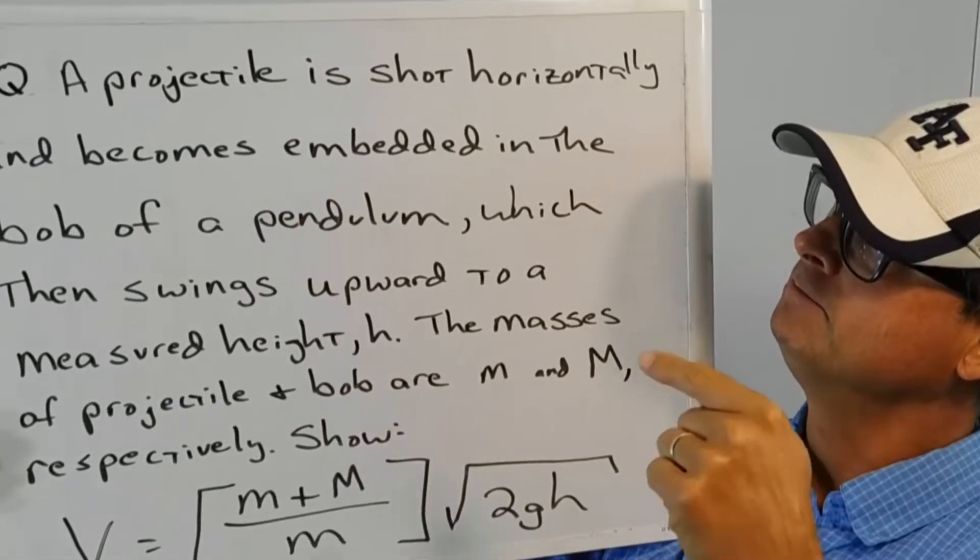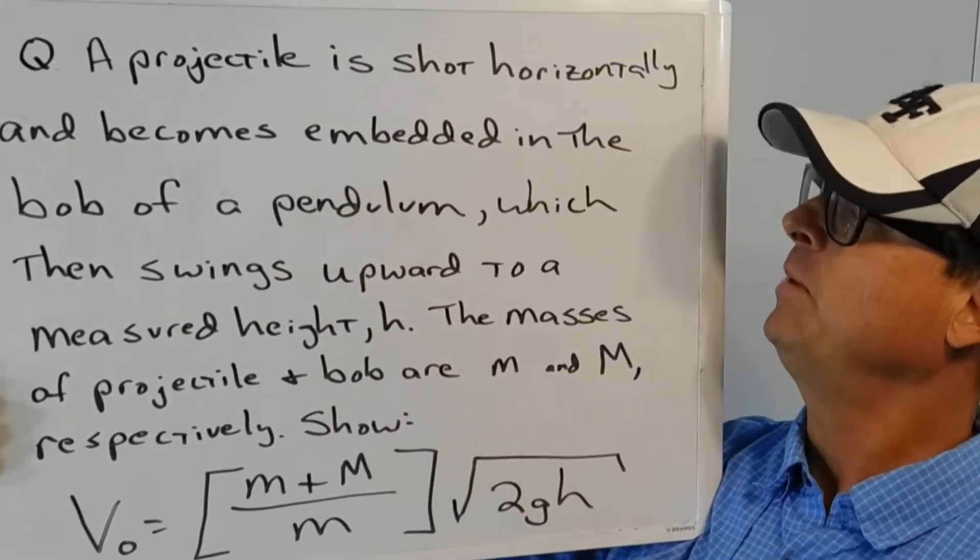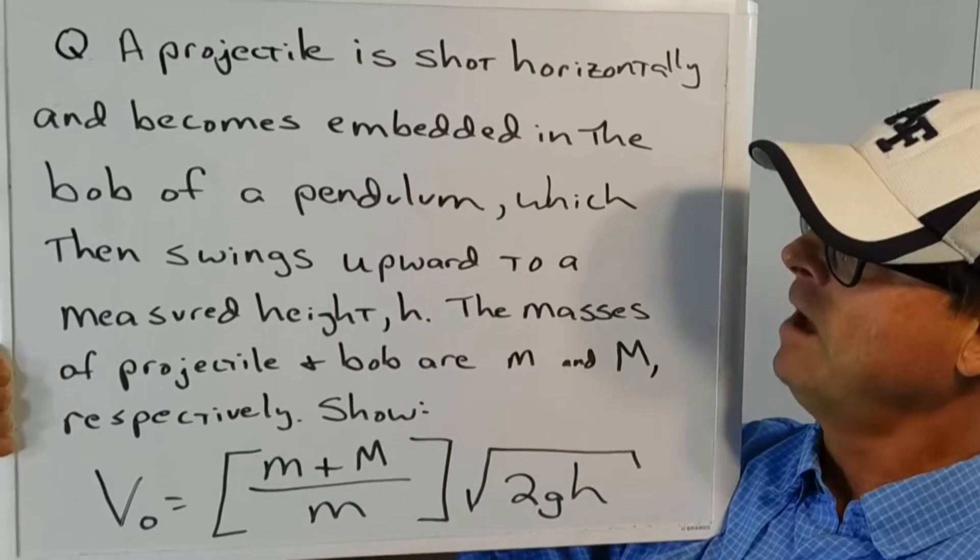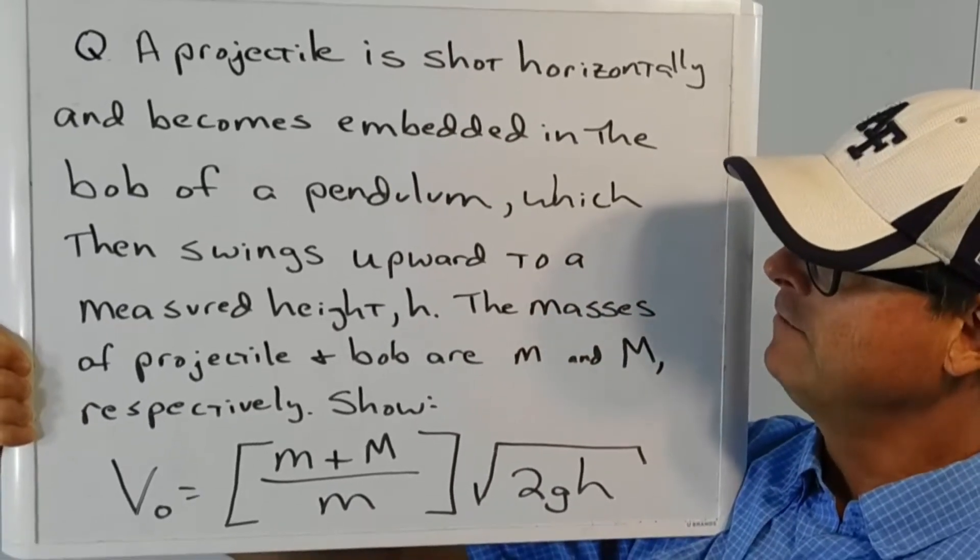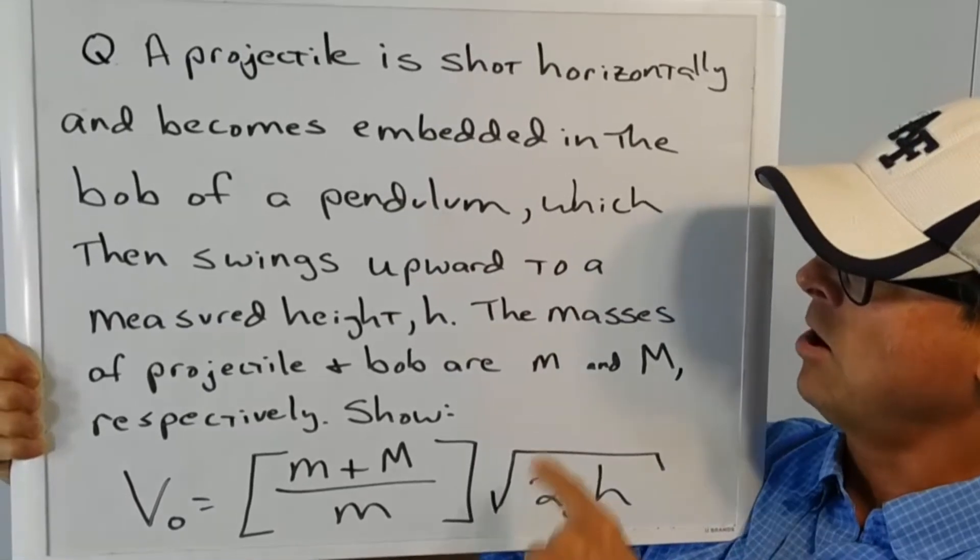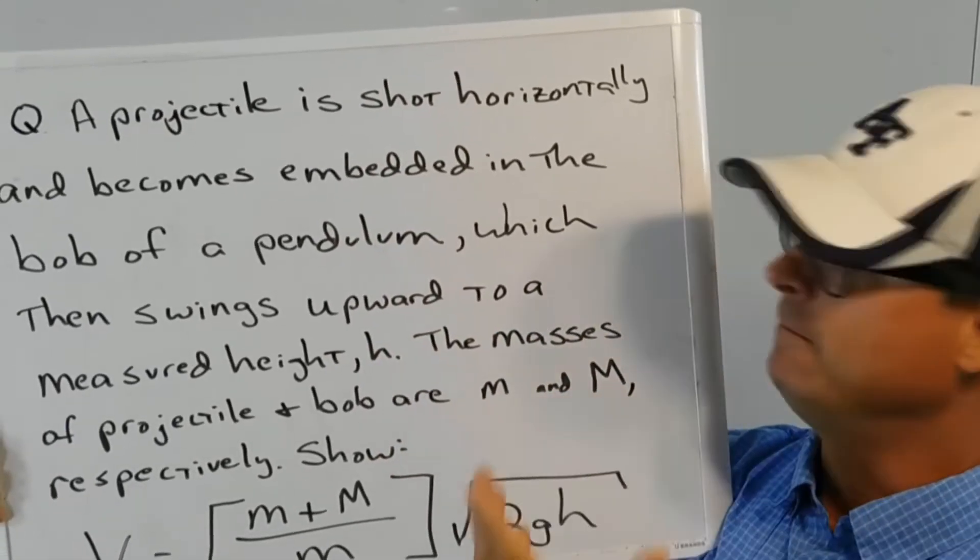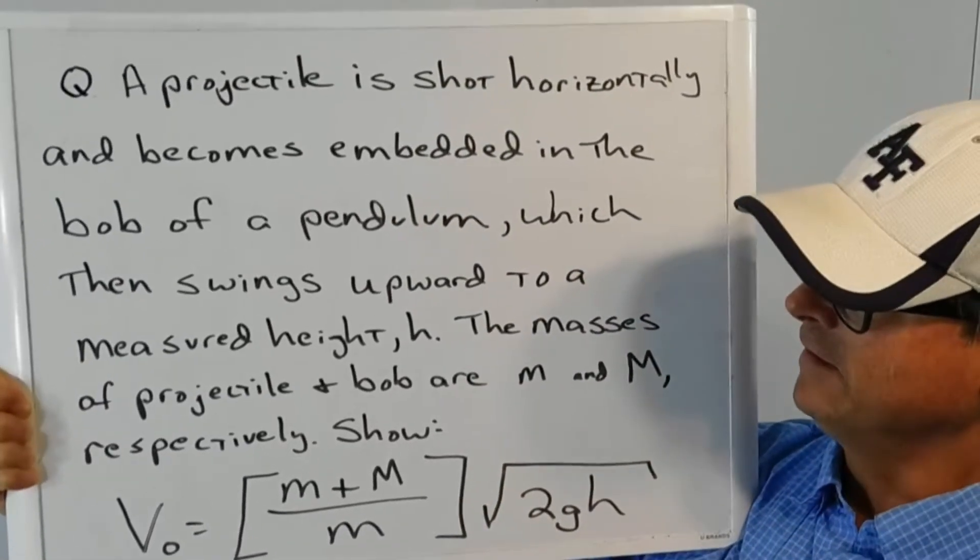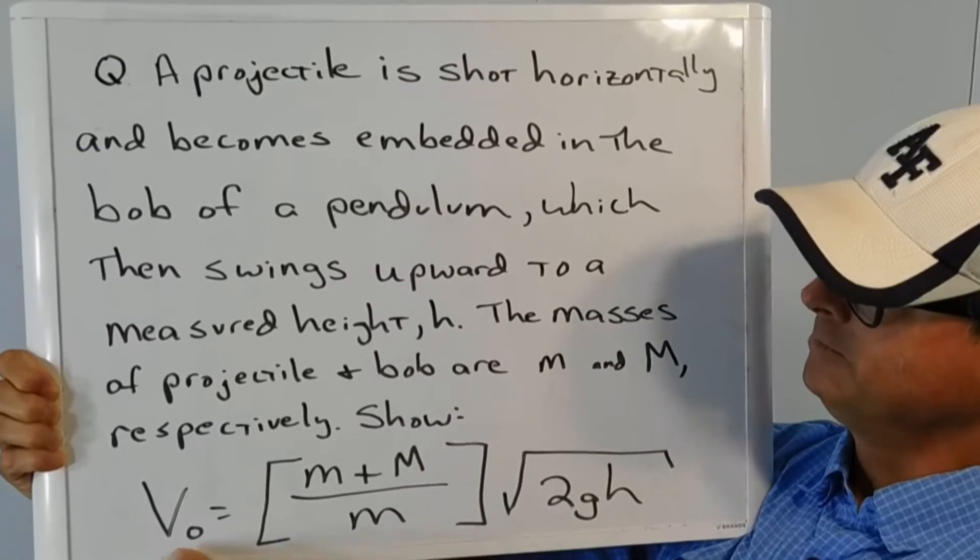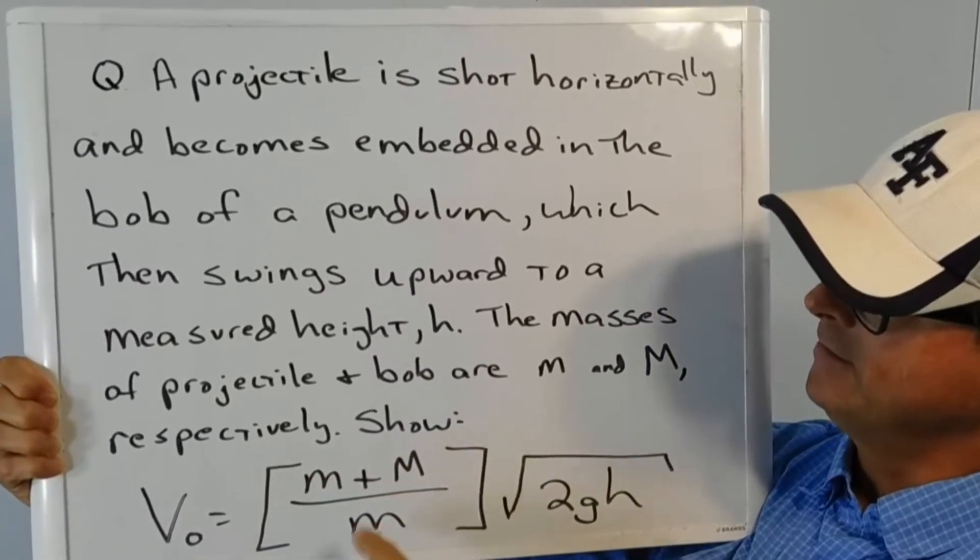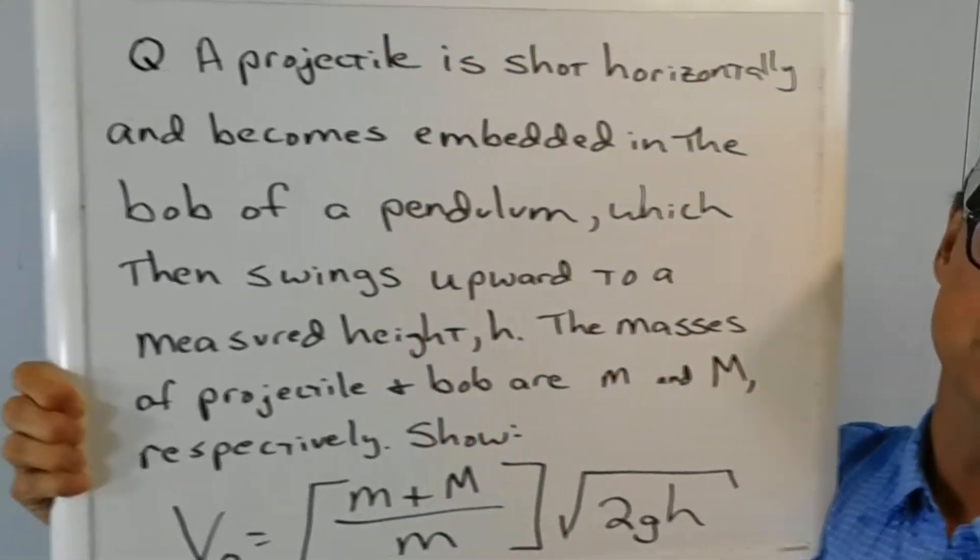So the projectile is shot horizontally and becomes embedded in the bob of a pendulum, which then swings upward to a measured height h. The masses of the projectile and the bob are lowercase m for the projectile and uppercase M for the bob, respectively. Show that the initial velocity of the projectile is equal to the sum of the masses divided by the projectile mass times the square root of 2gh.